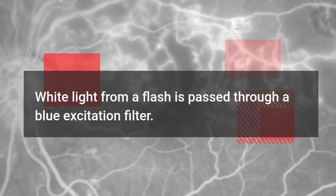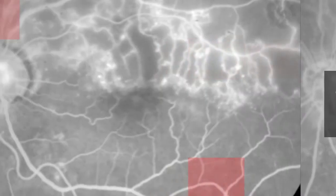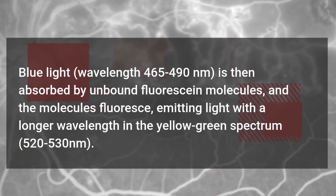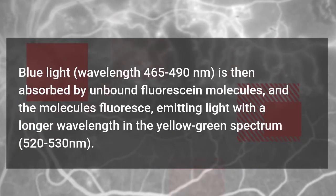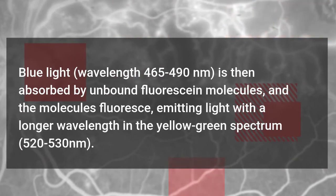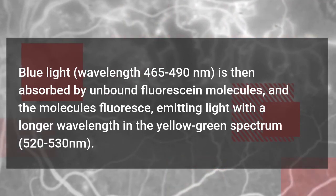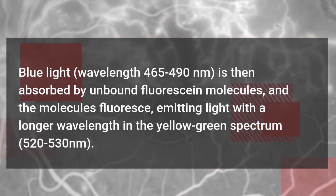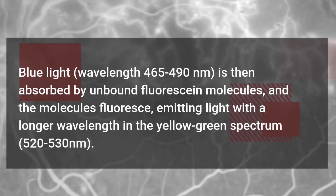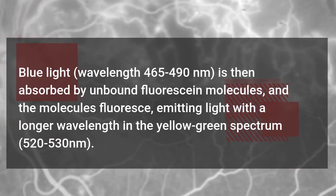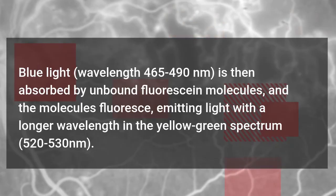White light from a flash is passed through a blue excitation filter. Blue light, wavelength 465 to 490 nanometers, is then absorbed by unbound fluorescent molecules, and the molecules fluoresce, emitting light with a longer wavelength in the yellow-green spectrum, 520 to 530 nanometers.